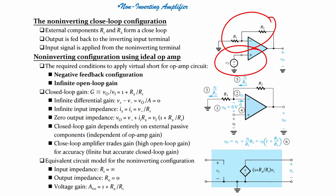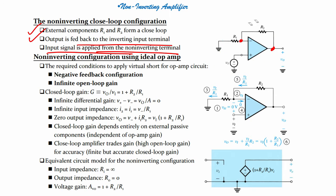Looking at the non-inverting closed-loop configuration, there are three key points. First, external components R1 and R2 form a closed loop, similar to the inverting amplifier. Second, the output is fed back to the inverting input. Third, the input signal is applied to the non-inverting terminal.